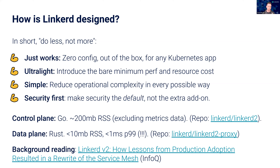Linkerd stays secure by default — you don't have to configure anything to get mTLS, it's just there. The control plane is written in Go, available at github.com/linkerd/linkerd2. The data plane uses a custom micro-proxy written in Rust — a very fast language that compiles to native code and sidesteps many memory vulnerabilities seen in C or C++.